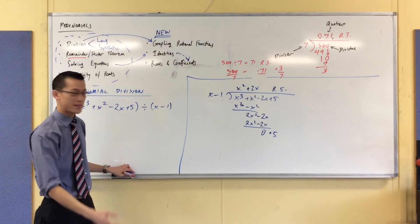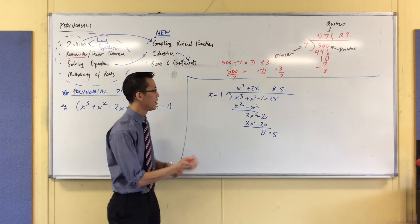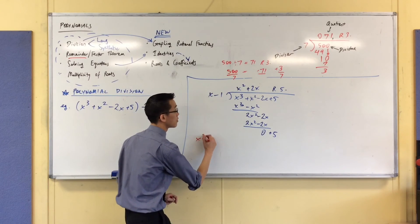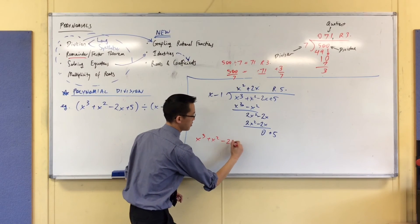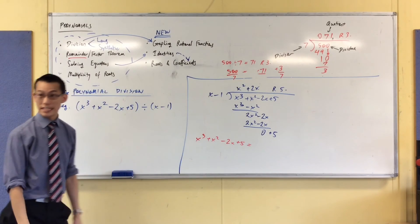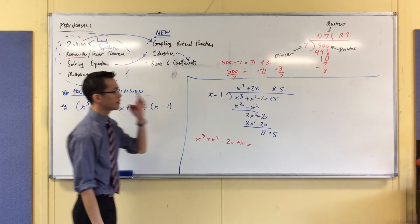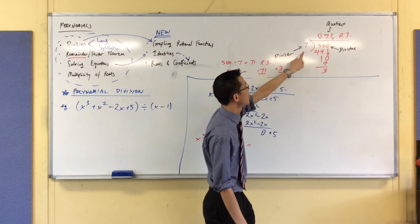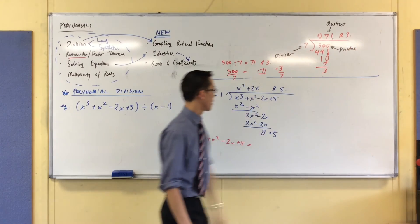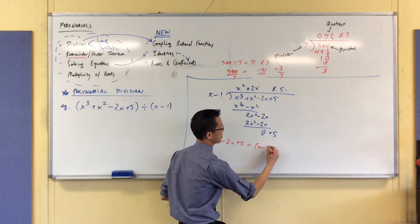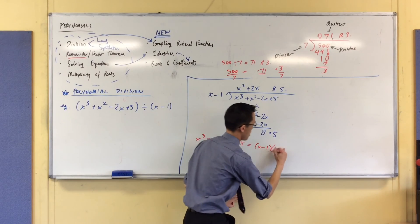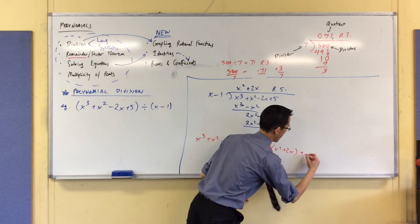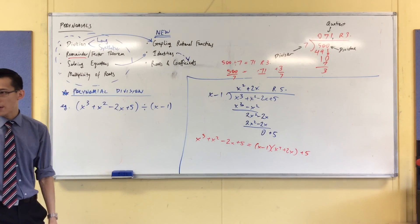Now I'm going to make the same statement, but down here of this polynomial. So I'm going to say if I take x cubed plus x squared minus 2x plus 5, there's my dividend. It's the divisor times the quotient plus whatever was left over. Just like I had 7 by 71 plus 3. So in this case what I've got is x minus 1. There's my divisor. x squared plus 2x as my quotient. There's my remainder hanging down at the end. Are you okay with that?